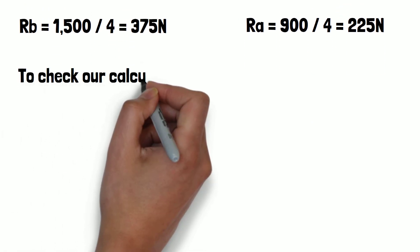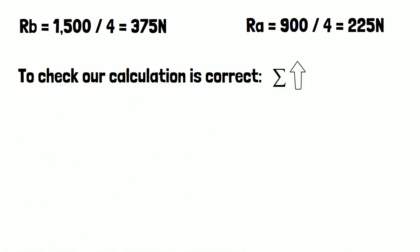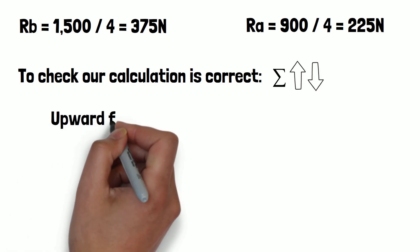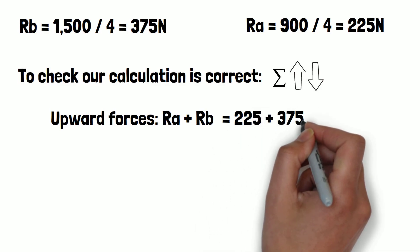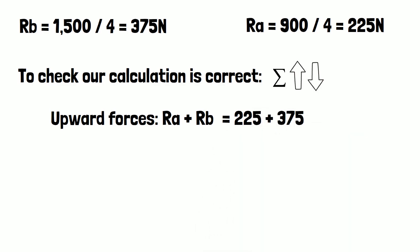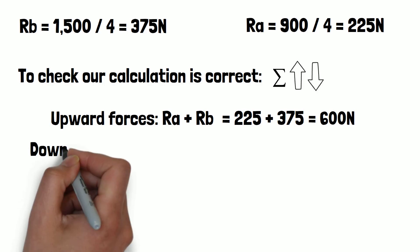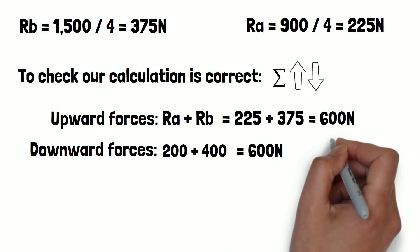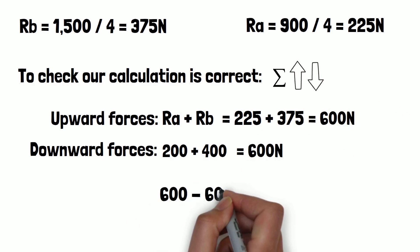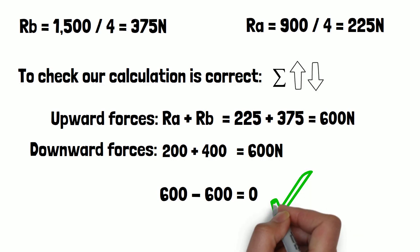To check our calculation is correct we can sum the vertical forces up and down. The sum of the upward forces RA plus RB is 225 plus 375 which equals 600 newtons. The sum of the forces applied in the downwards direction is 200 plus 400 which also equals 600 newtons. Since the sum of the upward and downward forces cancel out to zero, our calculation is correct.